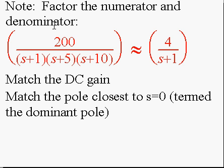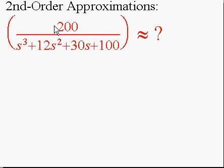If a system has a single pole near the origin that dominates the response, that's your dominant pole. Come up with a model that matches that dominant pole and matches the DC gain, and you've got a reasonable approximation for the system.